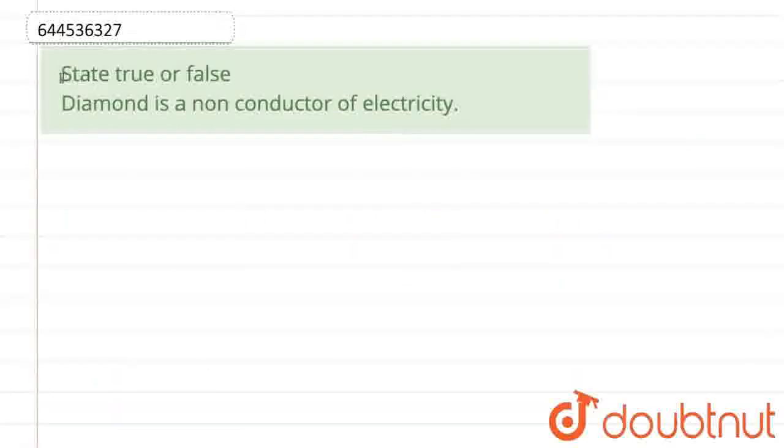Hello everyone, so the question is saying state true or false. Here it is given that diamond is a non-conductor of electricity. We have to say whether this statement is true or false.